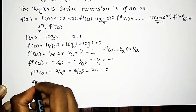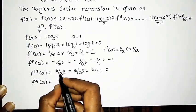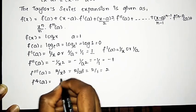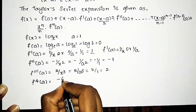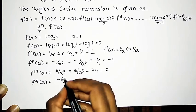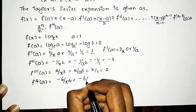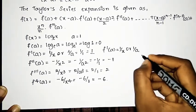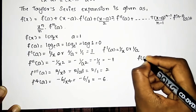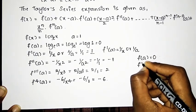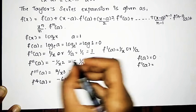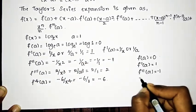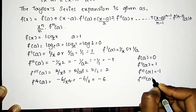For the 4th derivative: the derivative of 2/x³ is -6/x⁴. Substituting a = 1: f''''(a) = -6/1 = -6. So to summarize: f(a) = 0, f'(a) = 1, f''(a) = -1, f'''(a) = 2, and f''''(a) = -6.